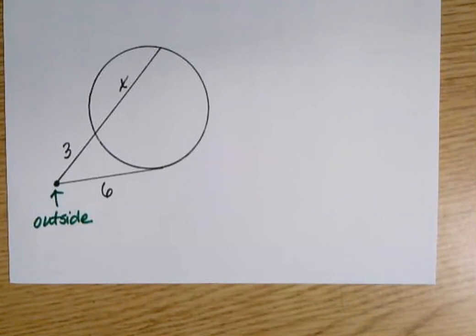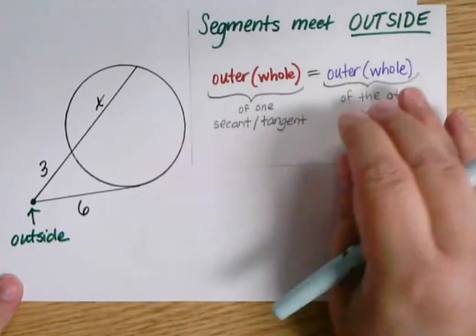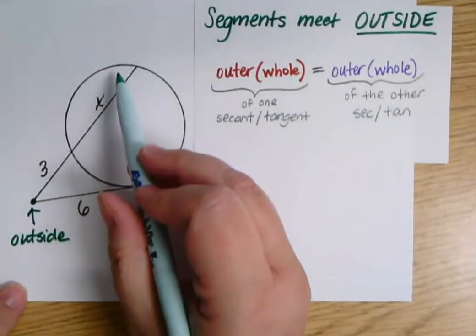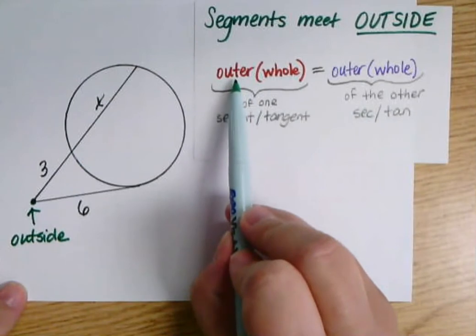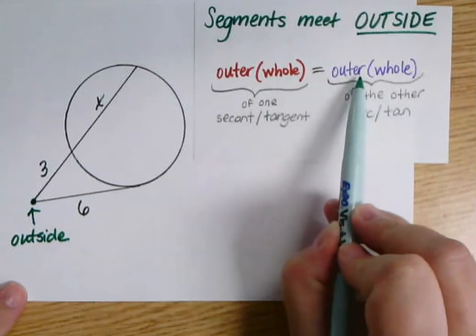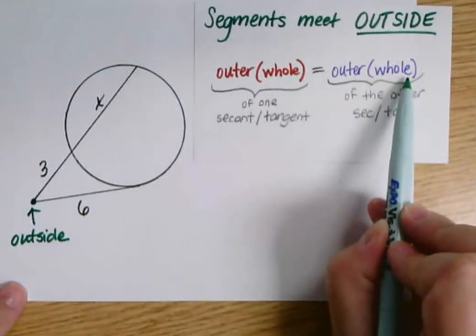So when my segments meet outside the circle, the way I break down the rule is I say I'm going to write an equation. It's really just expressing the proportionality here, but my equation is going to say the outer part times the whole length for one of the segments is equal to the outer part times the whole length for the other segment.